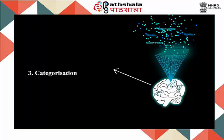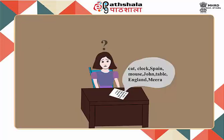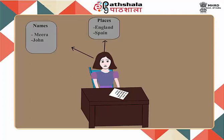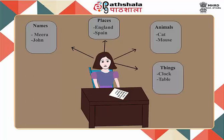3. Categorization. Maria has been given a list of words but she can't remember them all. She then has an idea: she categorizes them into names, places, animals, and things.